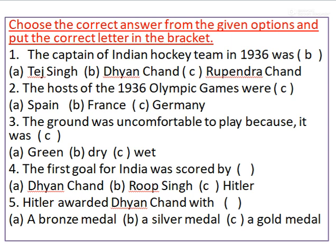The first goal for India was scored by — options: Dhyan Chand, Roop Singh, Hitler. Dhyan Chand was the captain, and Hitler was the German ruler. Who scored the first goal? Roop Singh. The first goal for India was scored by Roop Singh. Option B.